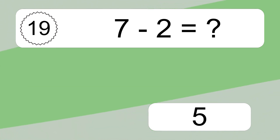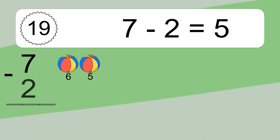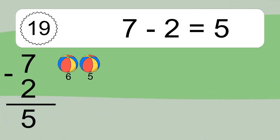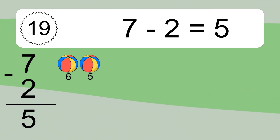7 minus 2 equals what? 7 minus 2 equals 5. Let's count it! 6, 5.